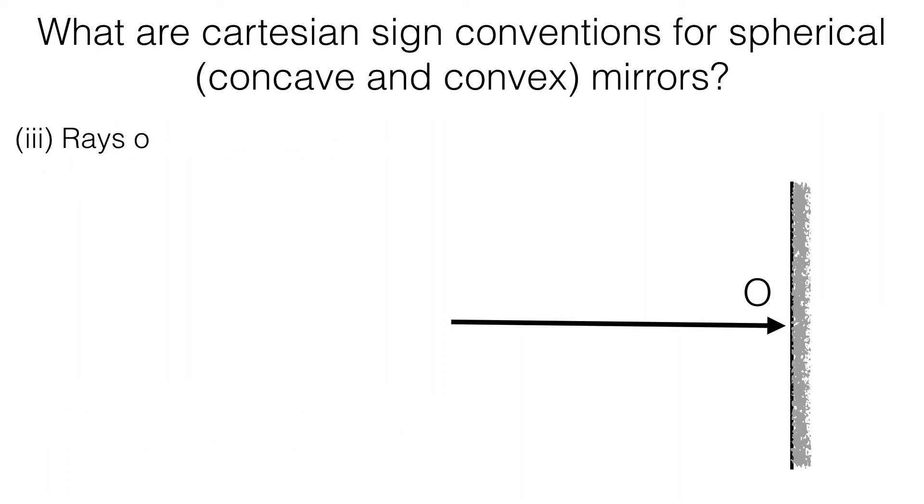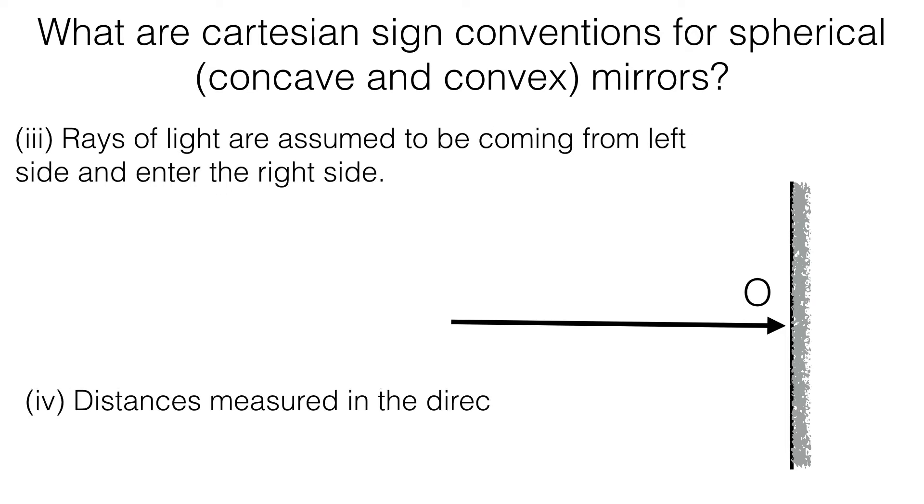Rays of light are assumed to be coming from left side and enters the right side. Distances measured in the direction of the incident ray are taken as positive.